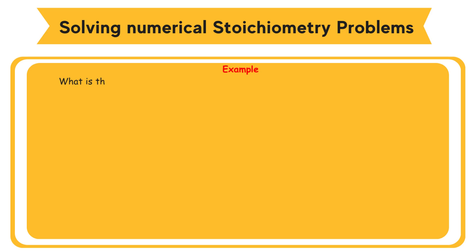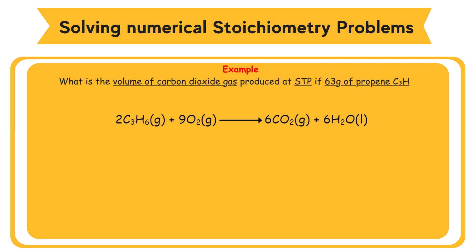Example: What is the volume of carbon dioxide gas produced at STP if 63 grams of propene C3H6 is burned completely? Relative atomic mass: H equals 1, C equals 12. Molar volume: 22.4 cubic decimeters per mole at STP.